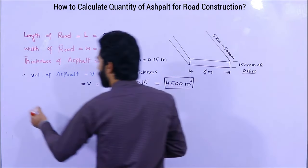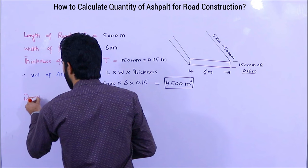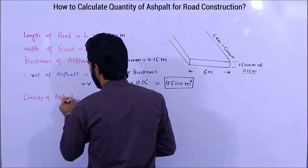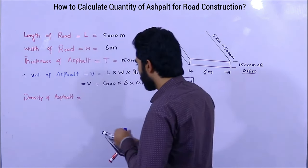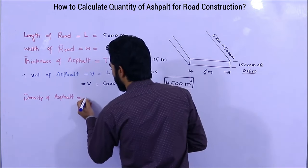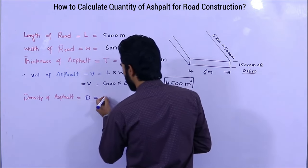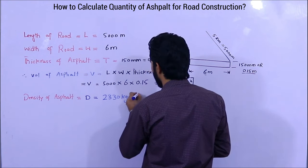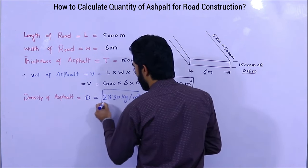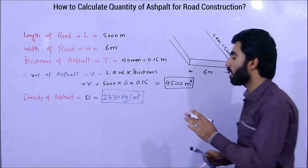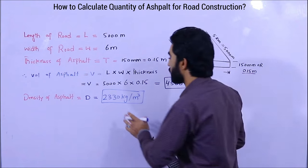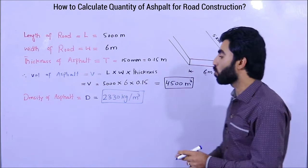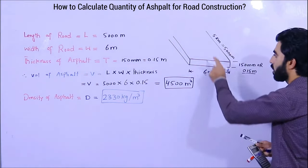Now what is the density of asphalt? The density of asphalt is 2330 kg per cubic meter. This means in 1 cubic meter we have 2330 kg of asphalt. Now how much asphalt do we require to complete the construction of this road?